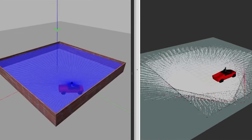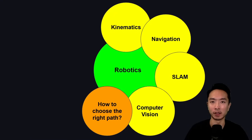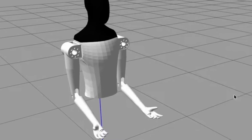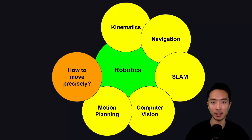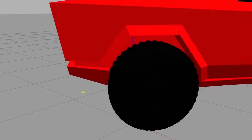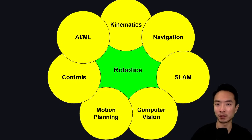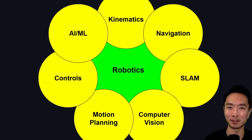Here you can see a Cybertruck driving around to create a map of its environment. How about how to see? This is the study of computer vision. What you see here is a depth map — this is what the robot sees to figure out how far something is. Another question is how to choose the right path, which is the study of motion planning. We also have how to move something precisely, which is the study of controls. And lastly, how to think — this is what AI and machine learning helps us with. Now that you have a good overview of the disciplines in robotics, we're ready to dive into the seven steps.